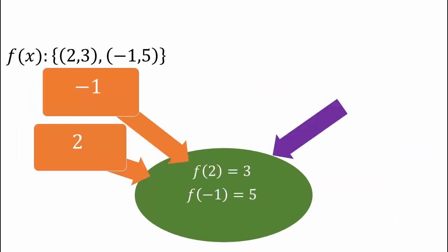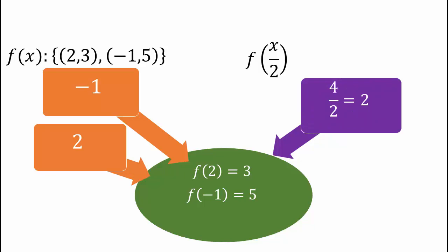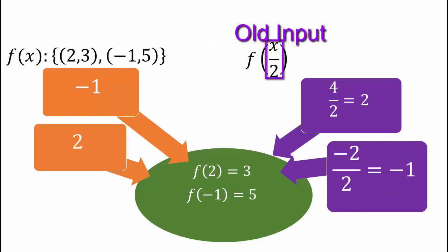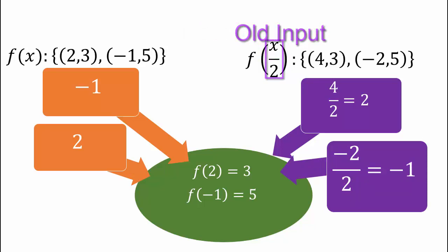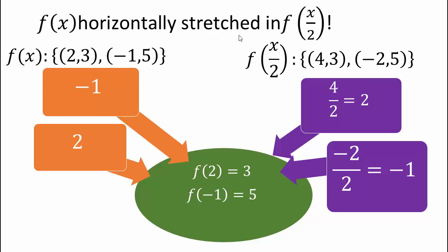What happens when you have division by 2, f of x over 2? We need x over 2 to equal the original inputs. So 4 over 2 gives 2, meaning input 4 produces output 3. And negative 2 over 2 gives negative 1, meaning input negative 2 produces output 5. So our new domain is 4 and negative 2 — the domain got horizontally stretched by a factor of 2.